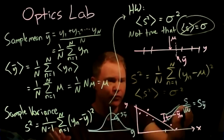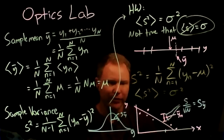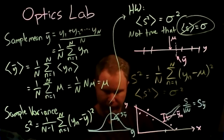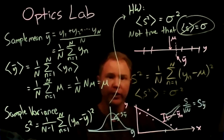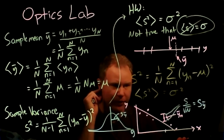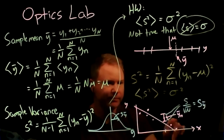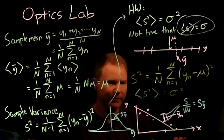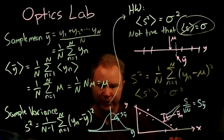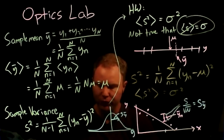s_ȳ = s/√n. Next time I will prove that √n is the right value. But you'll also simulate this in Python — plot the distribution of a bunch of averages and show that the width of that distribution is given by this expression.